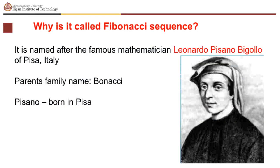Why is it called the Fibonacci sequence? It is named after the famous mathematician Leonardo Pisano Bigolo of Pisa, Italy, whose family name is Bonacci and who was born in Pisa, hence Pisano. The exact date and origin of the Fibonacci sequence is unknown, although it is believed that contributions to the theory began in 200 BC by Indian mathematicians whose studies were based in the language of Sanskrit. The sequence was introduced to Western European mathematicians in 1202 by Fibonacci.